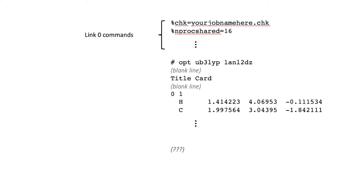Going from top to bottom, first we start off with our link 0 commands. This is just the computer-related stuff, like what you want your checkpoint file to be called and how many processors you want to run the job on.